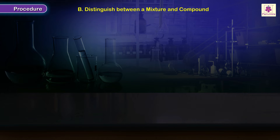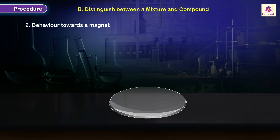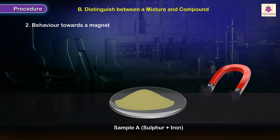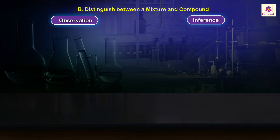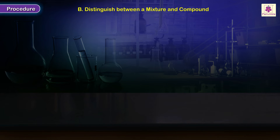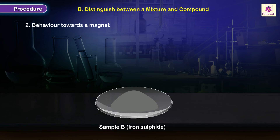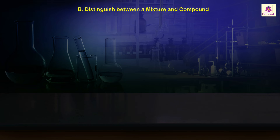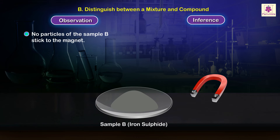Procedure to distinguish between a mixture and compound on the basis of behavior towards a magnet: place a spoonful of Sample A on a watch glass and slowly move a magnet through the mixture. Observation: iron filings stick to the poles of the magnet — iron in the mixture retains its magnetic property. Place a spoonful of Sample B on a watch glass and slowly move the magnet through the powder. Observation: no particles of Sample B stick to the magnet — iron in the compound has lost its magnetic property.